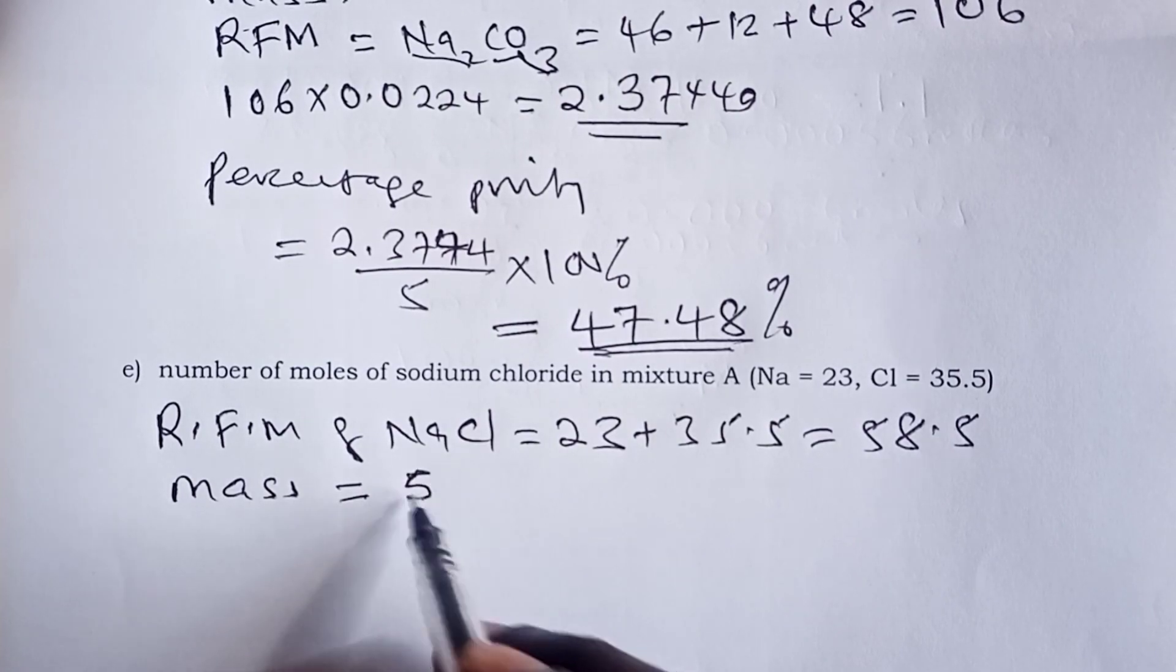The next question is asking us to find the number of moles of sodium chloride in the mixture. So here, we will start by getting the RFM of sodium chloride, and this should be 23, you add to 35.5, that gives you 58.5 as the relative formula mass. Then, from our mass of sodium carbonate, we can be able to get mass of sodium chloride by subtracting from 5, which was the original mass of the mixture.